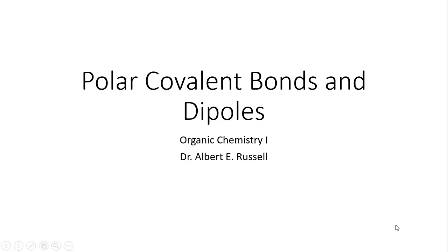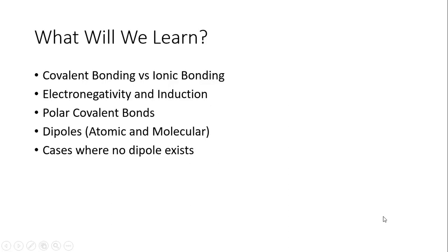We're going to talk about polar covalent bonds and dipoles. First, we'll cover covalent bonding versus ionic bonding, then electronegativity and induction, which leads us to polar covalent bonds. After that, we'll discuss dipoles — individual atomic dipoles as well as molecular dipoles — and cases where there are no dipoles, such as symmetrical molecules or dipoles that cancel out.